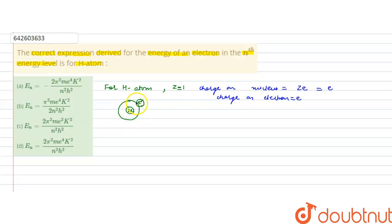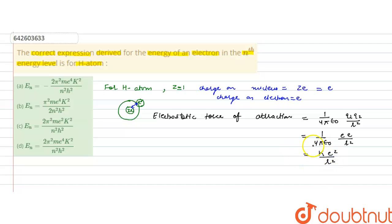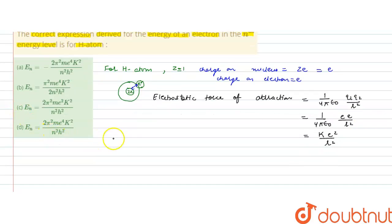When this electron is orbiting in the nth energy level around the nucleus, moving in this orbit, the electrostatic force of attraction will be balanced by the centrifugal force. The electrostatic force of attraction between the negative charge of the electron and the positive charge of the nucleus is given by (1/4πε₀) × q1q2/r², which equals ke²/r², where k = 1/4πε₀ is a constant.